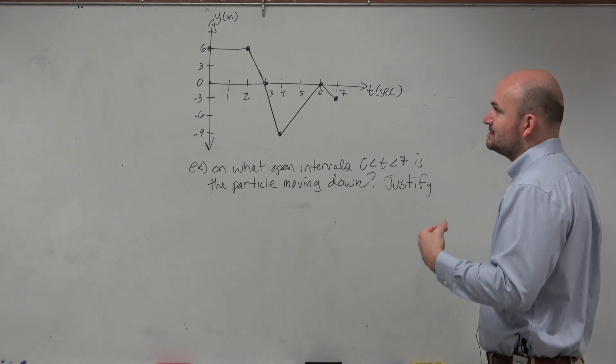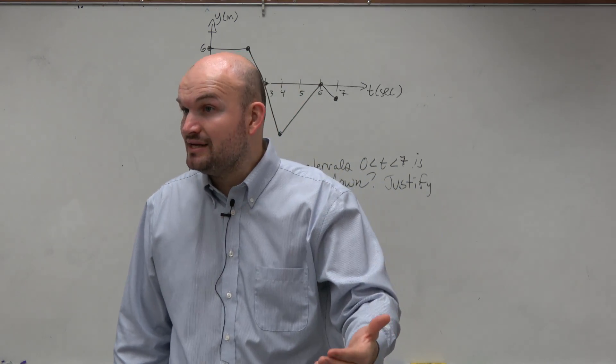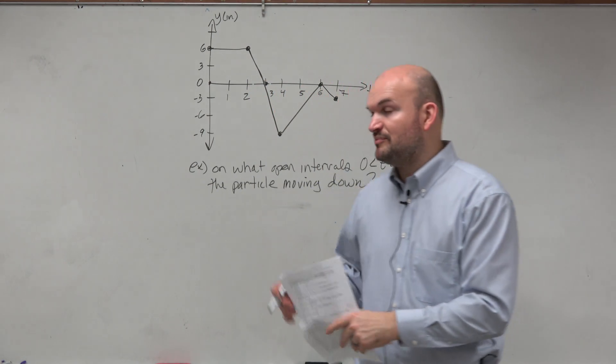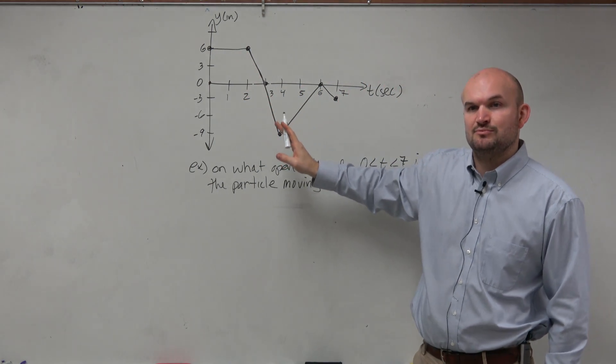So we know that it is moving down when it would have a negative velocity. But we've got to be careful. We don't want to use the word velocity. So what is another way, in terms of position, to represent that it has a negative velocity, that it's moving down?